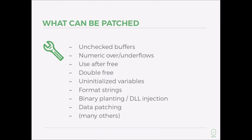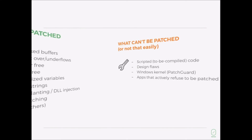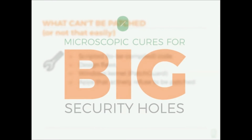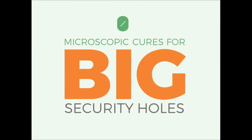ZeroPatch can be used to patch virtually any critical vulnerability in native code that can be used in a real attack. It is however not ideal for fixing design flaws and scripted code. ZeroPatch — microscopic cures for big security holes.